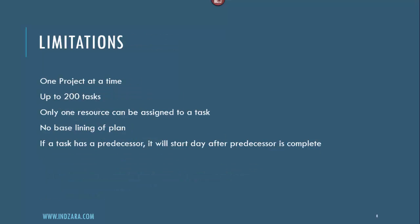There are some limitations to this template as well. You can only manage one project at a time — for a second project you would create another copy of the document. There is a limit of up to 200 tasks per project, and only one resource can be assigned to a task at a time. There is no baselining of the plan, meaning you cannot lock your original plan and compare it to the current plan — as you enter actual data, the plan updates and you cannot compare back to the original. If a task has a predecessor, it will always start the day after the predecessor is complete.